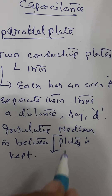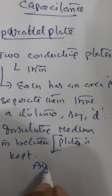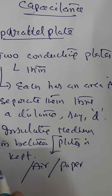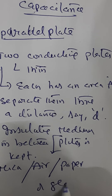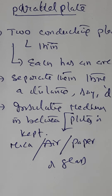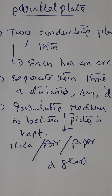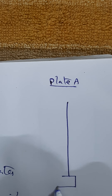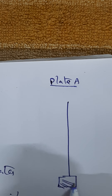This medium I am talking about can be air, paper, mica, or glass — any of these insulating mediums. Let us look at a diagrammatic representation. I am taking a metallic plate, let me call it plate 1.